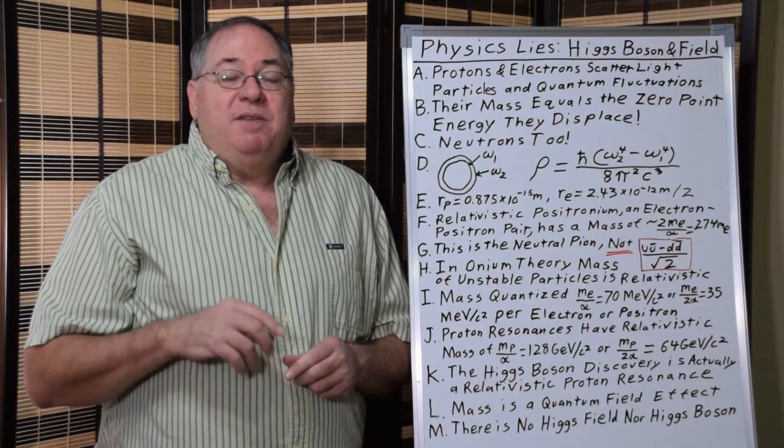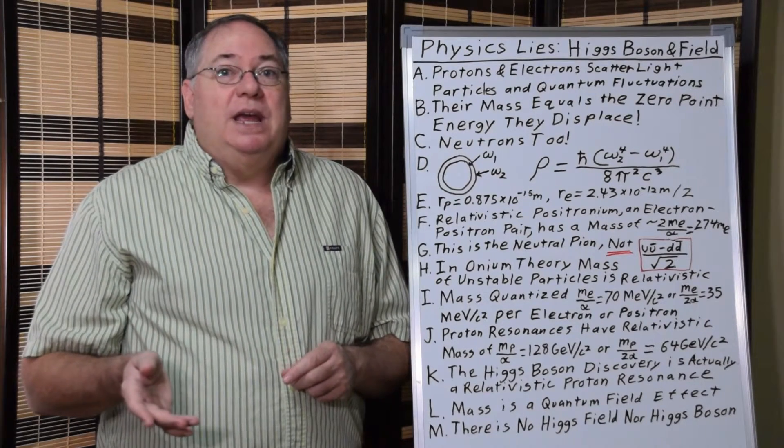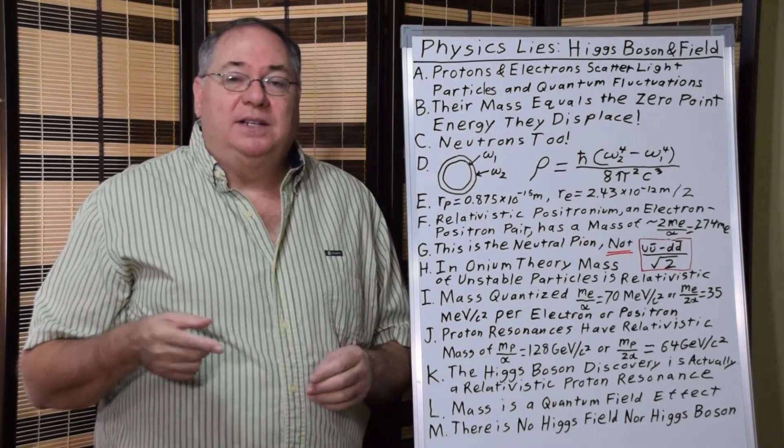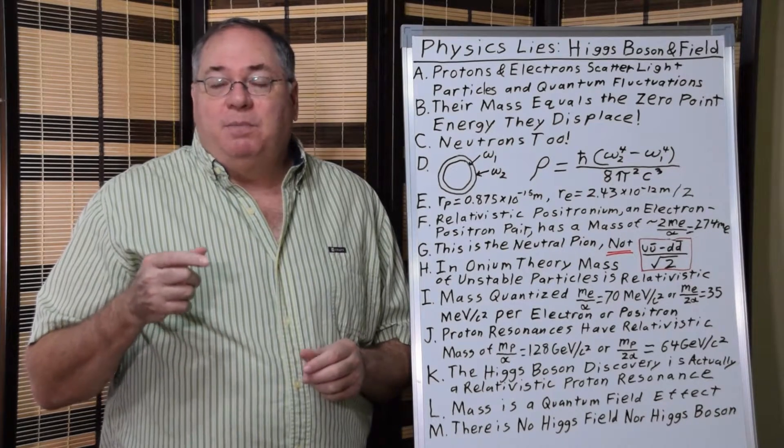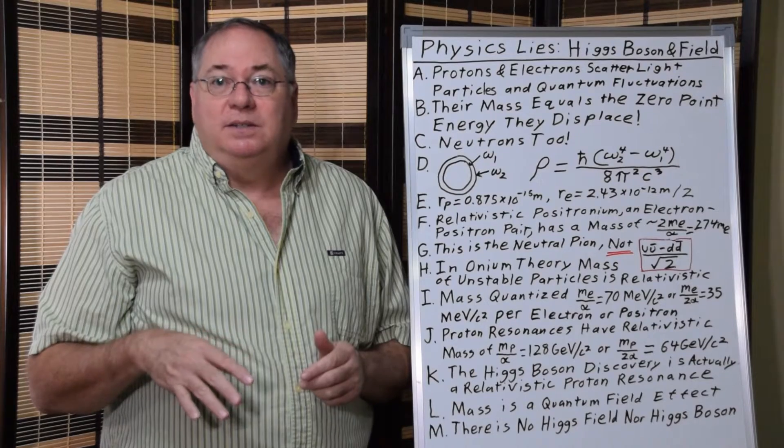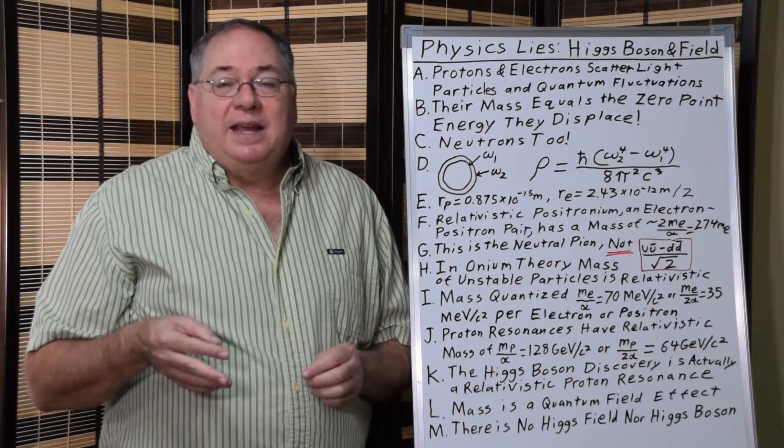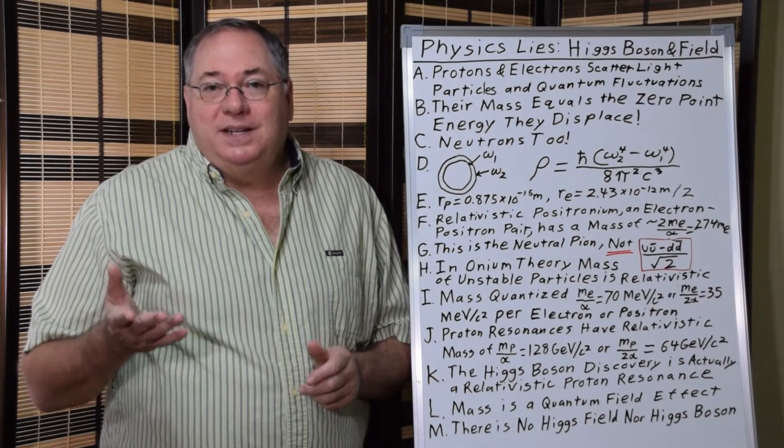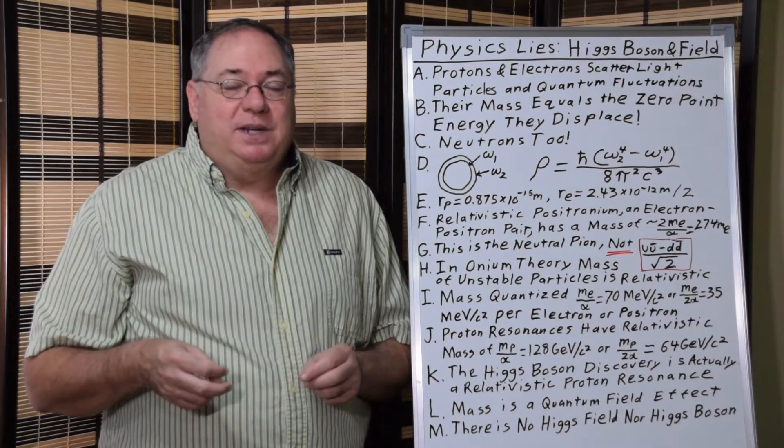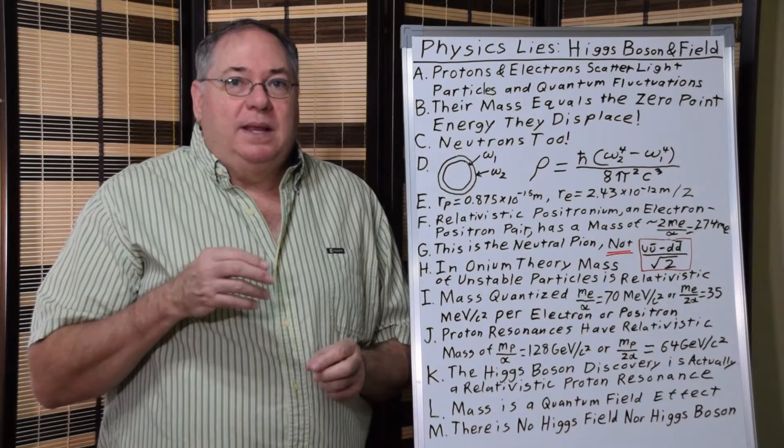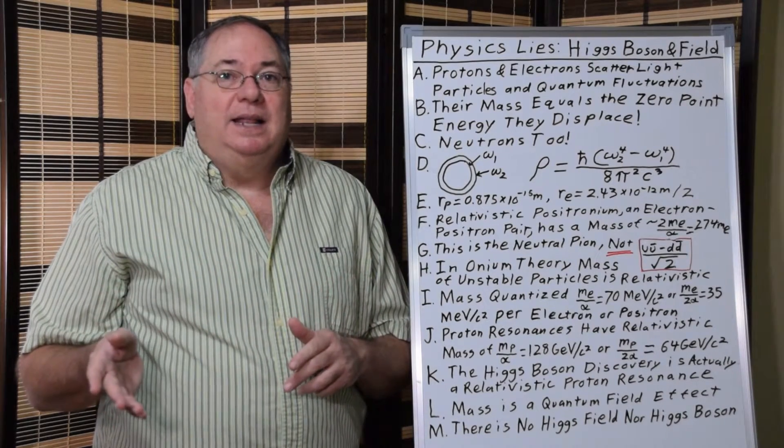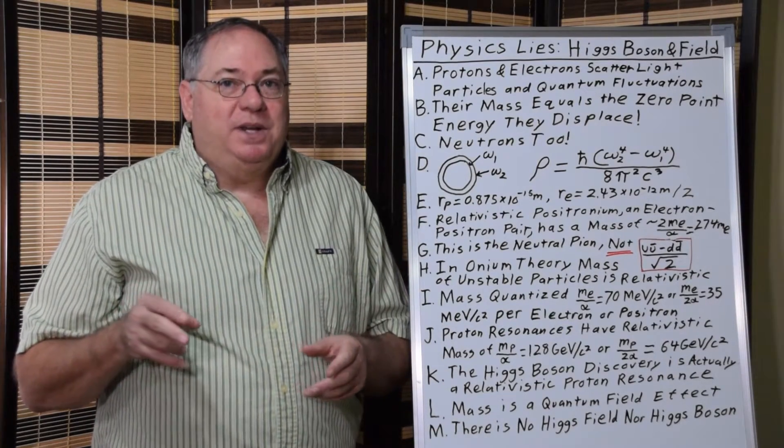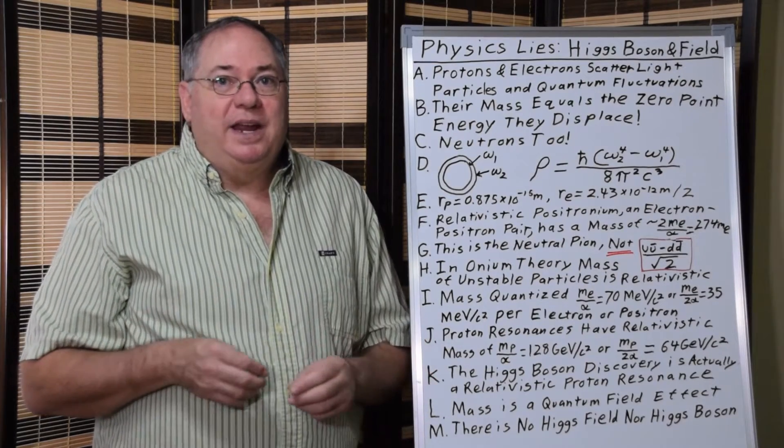Now similarly, you get resonances of relativistic protons. And like with the electrons, you get energy that's related to the fine structure constant. So you have the proton mass divided by the fine structure constant, which is approximately 137. And that gives you 128 GeV per C squared, which is almost precisely the mass of the Higgs boson.